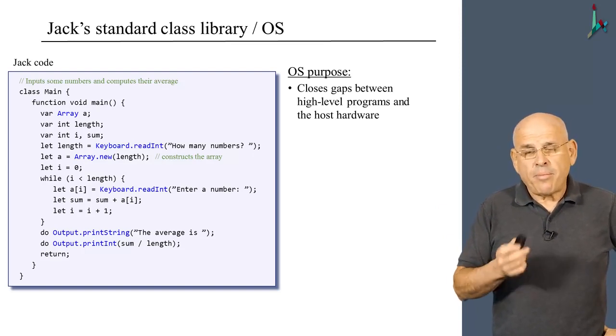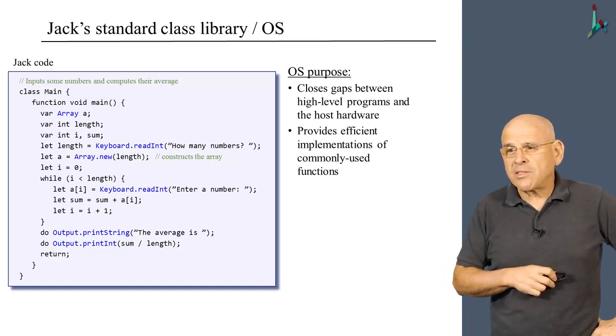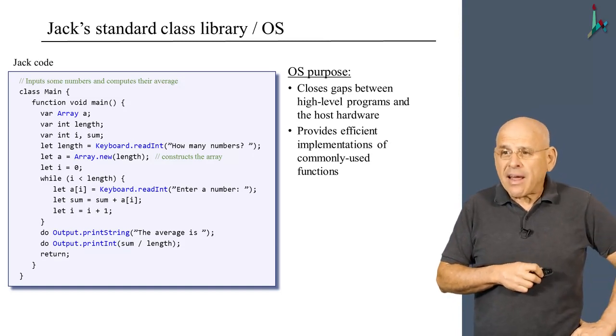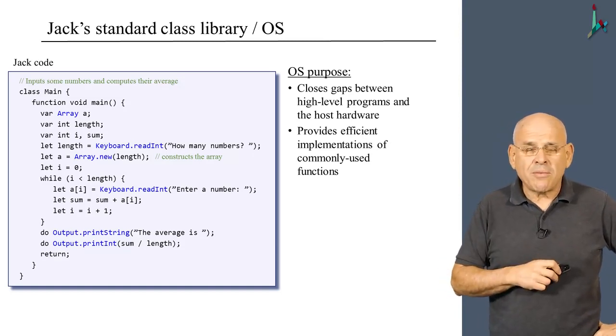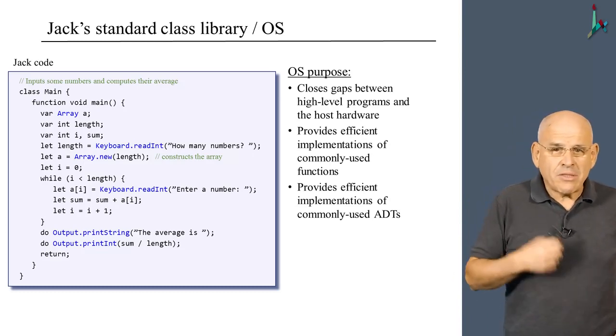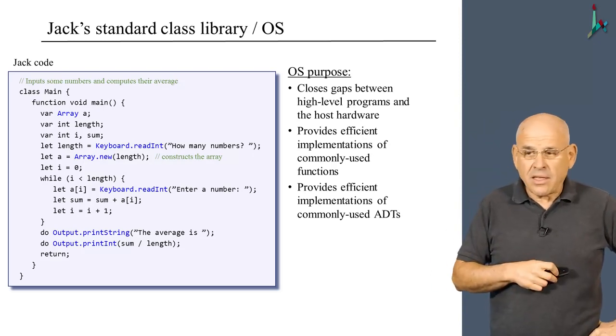Another purpose of the OS is to provide efficient implementation of widely used functions like a square root, for example. And finally, we also want the operating system to represent efficiently commonly used abstract data types like array, string, list, and so on.